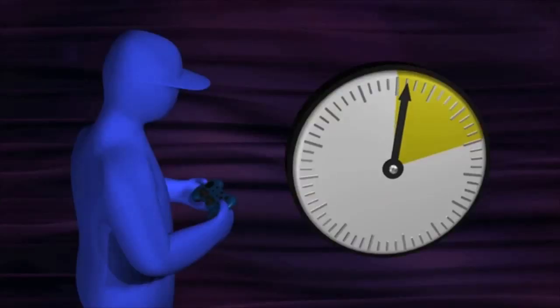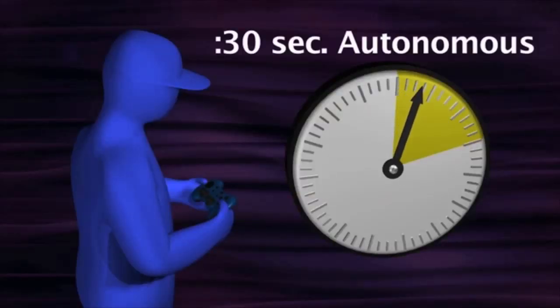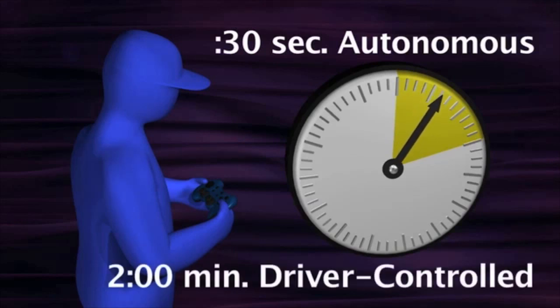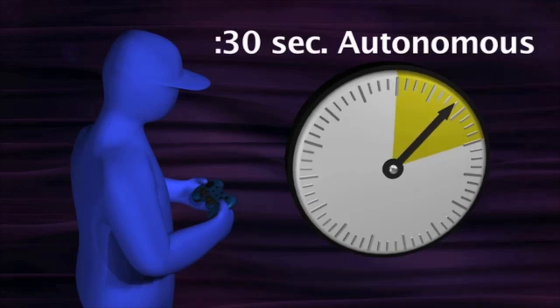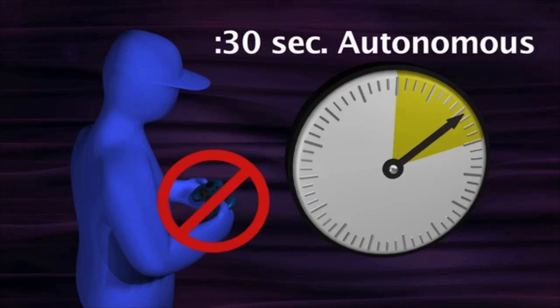Each match has two periods, a 30-second autonomous period immediately followed by a two-minute driver-controlled period. During the autonomous period, robots can only be controlled by pre-programmed instructions.